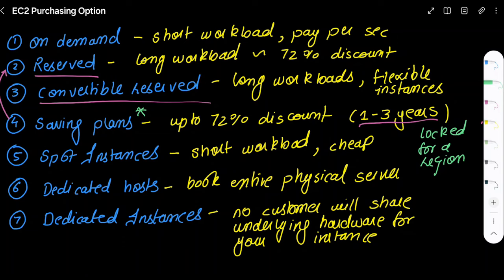The exam questions would toggle between reserved and convertible reserved where you're asked about this key difference. For example, a question can be thrown at you like you need something for long workloads but you should have the leverage to change the instance types. Obviously you cannot do it with reserved, but you can do it with convertible reserved, so that would be the correct option. You can also be asked the difference between reserved instances and saving plans.